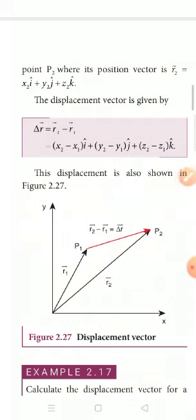So, ΔR vector = R2 vector − R1 vector. This is the formula. Applying the two values, we get: ΔR = (x2 − x1) î + (y2 − y1) ĵ + (z2 − z1) k̂. This is the displacement vector.